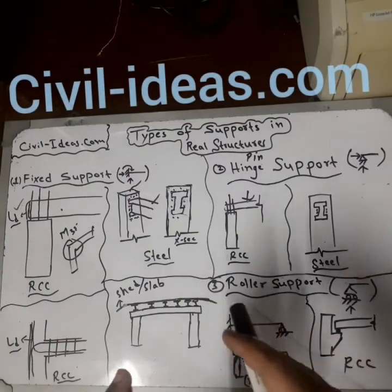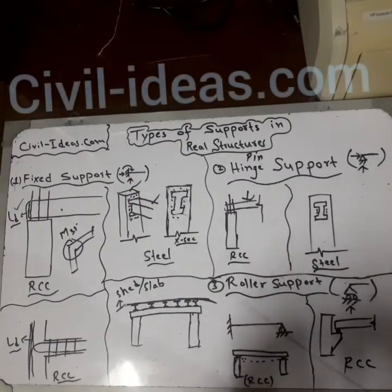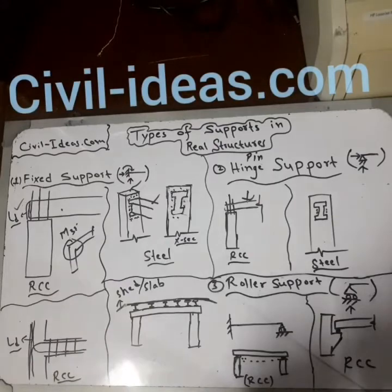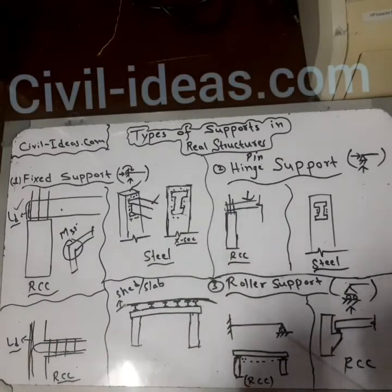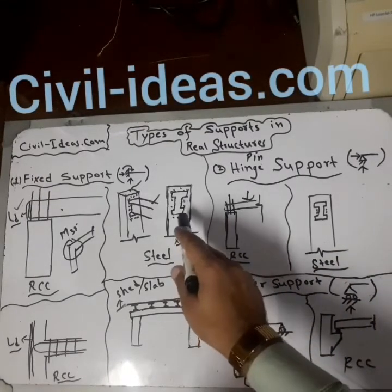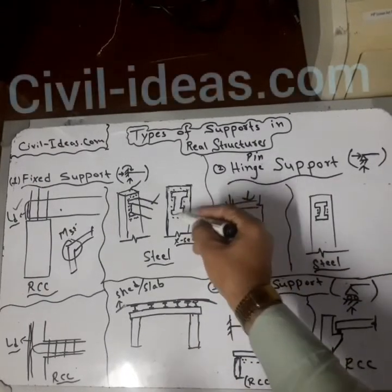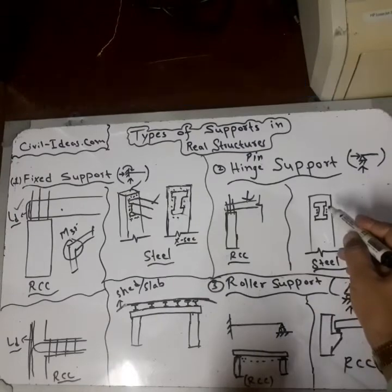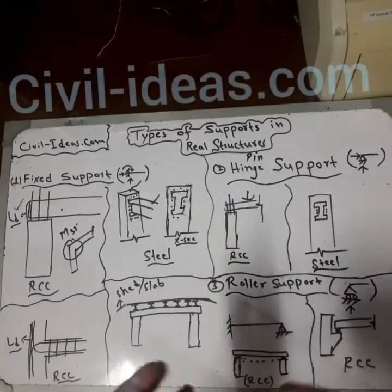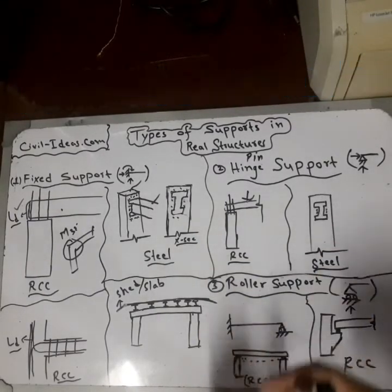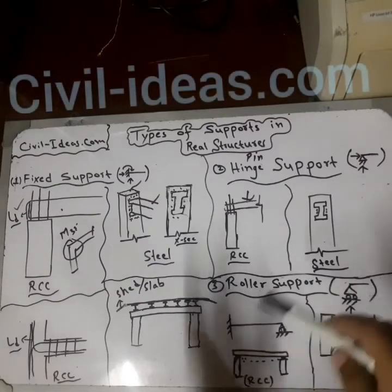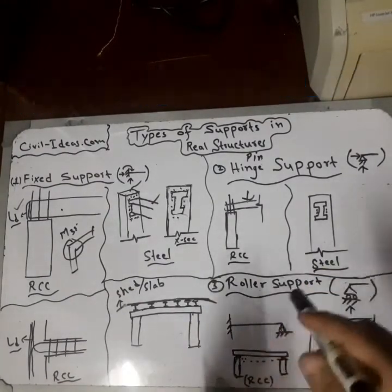100% fixed support is very difficult to achieve in practice. In steel structures, a hinge support occurs when you provide only two bolts on the inner sides instead of bolts throughout the perimeter. This does not properly hold the beam to the column, so moments are not transferred. These beams only carry vertical forces or shear forces, not bending moments.